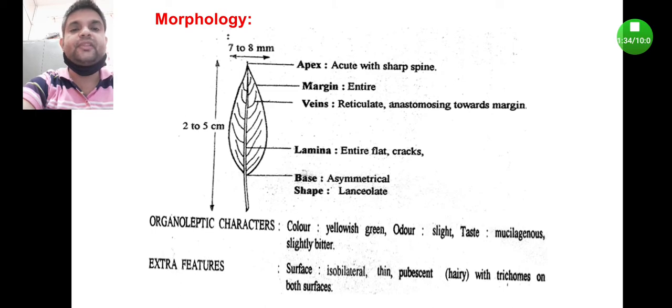Coming to the extra features, surface is ISO bilateral, thin and pubescent, meaning the upper layer is hairy with trichomes on both surfaces.